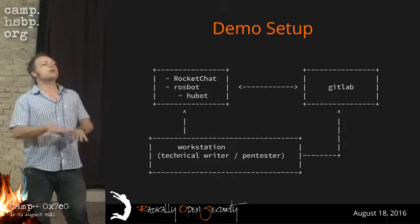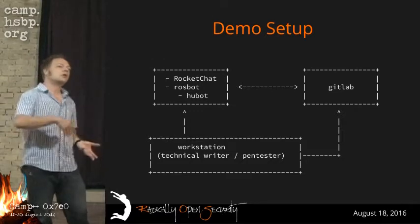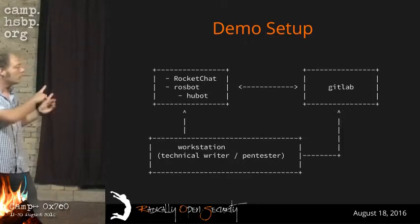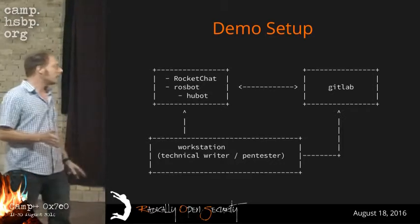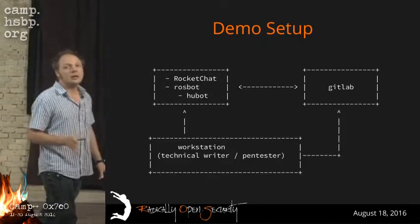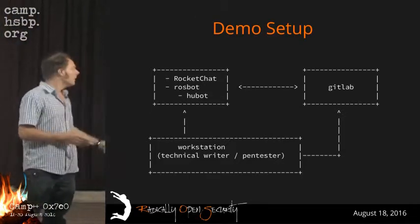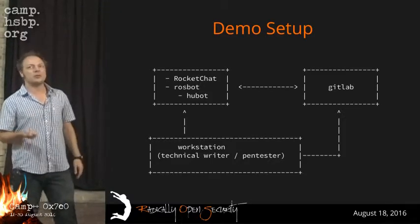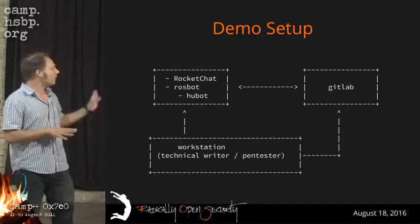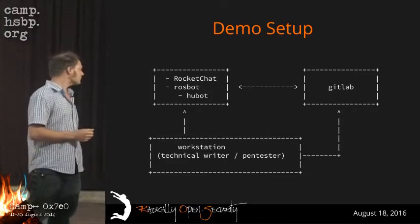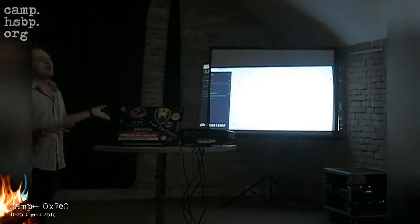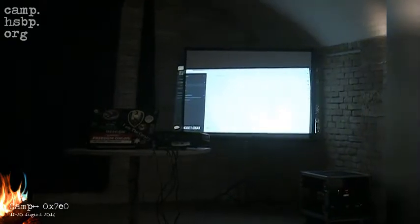The third component is the workstation. I could theoretically clone the whole Pentext repository to my local box and perform the steps to convert the XML files into PDF files locally, but I won't do that in the demo today. I'm only using a web browser — because RocketChat is web-based and GitLab has a web server — so to keep things simple, I do everything from a web browser.